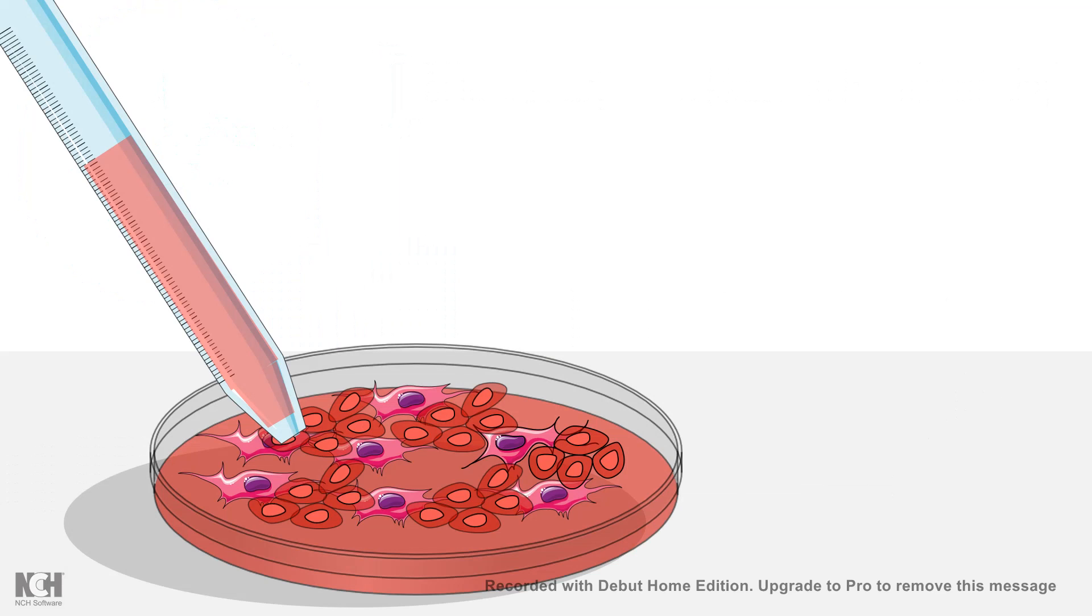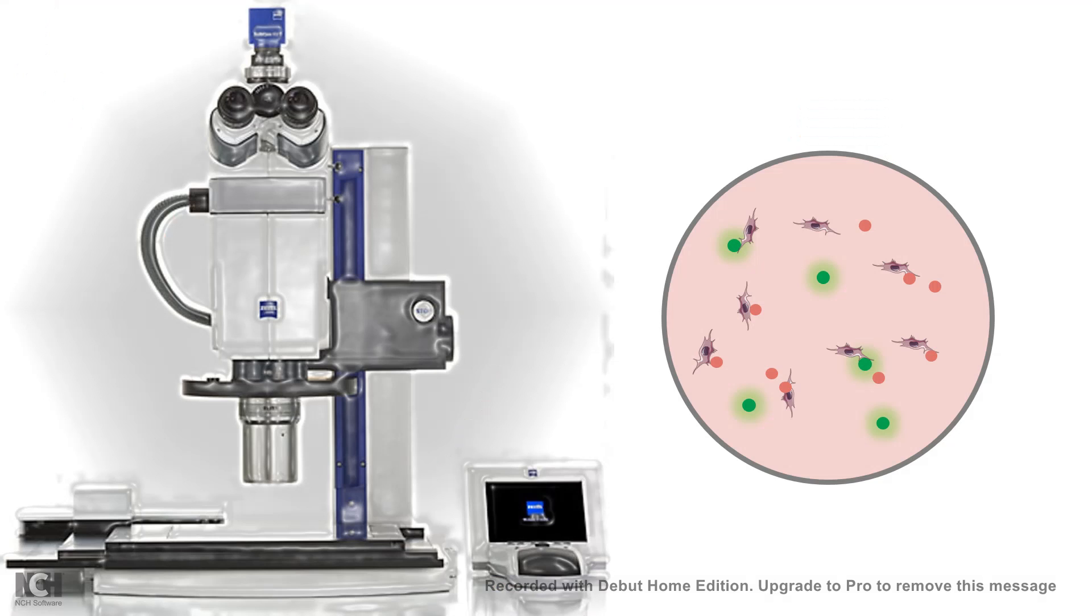After that, you take the transfected or electroporated cells and plate them on a fresh plate, and allow them to grow for a little while. Since we have an expression plasmid for GFP, the transfected colonies would be highlighted in green if you see under a microscope.